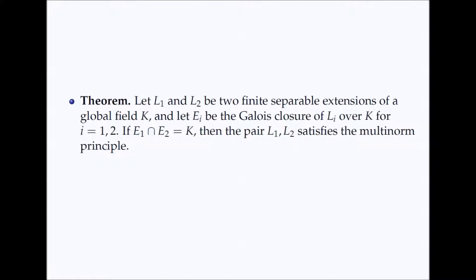The main result of our paper says that the Multinorm Principle holds for every pair of finite separable extensions with linearly disjoint Galois closures. This is significant because older sufficient conditions for the Multinorm Principle all assume that one of the individual extensions satisfies the Hasse norm principle. Our result shows that this assumption is unnecessary.